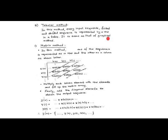The third method is the matrix method, where we arrange the input sequence and the impulse response in a given form, partitioning the diagonal elements. All the diagonal elements are then combined together to obtain the output samples one after another. Consider the first example where, for the LTI system, we are given input sequence x of n and impulse response h of n.